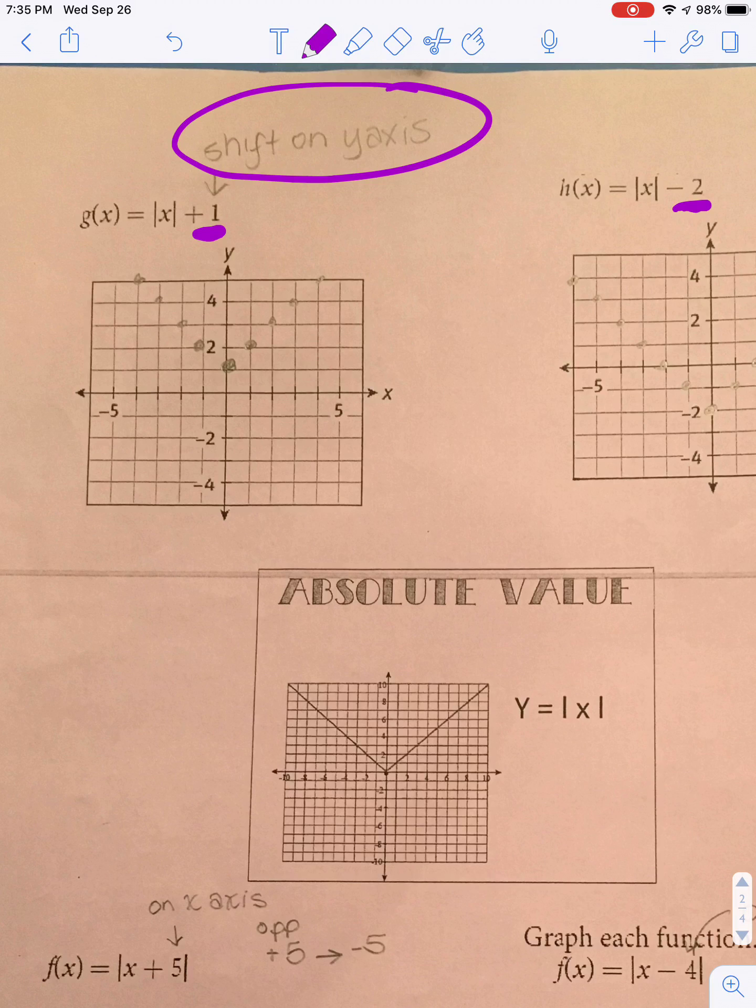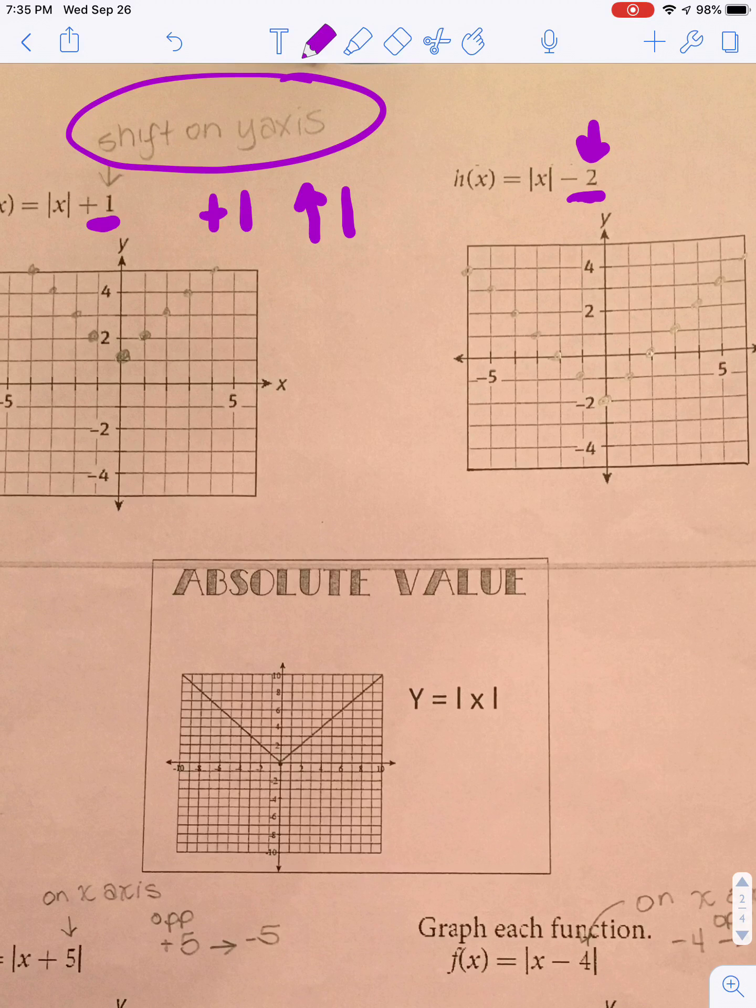So both of these have that. If it's plus 1, that means it goes up 1. This one is negative 2, so that means it's going to go down 2. Those shifts for both of these are on the y-axis.